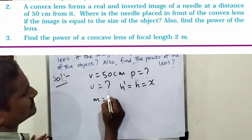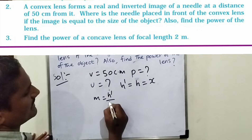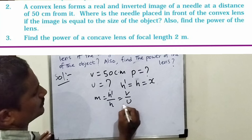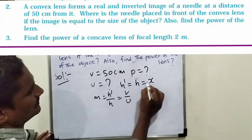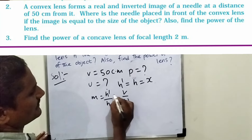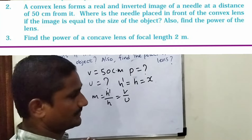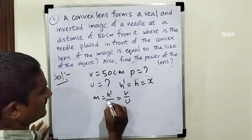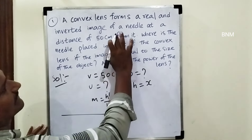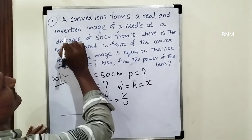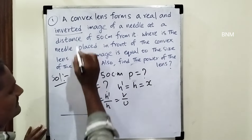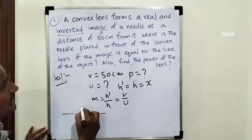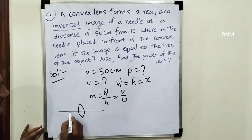If m is equal to x, h is equal to x — the height of the image and the height of the object are equal to x. In this case, this is the real and inverted image. So, inverted image — in this case I have to find the convex lens.